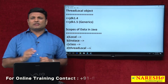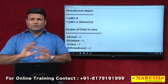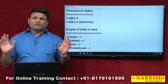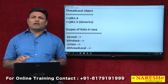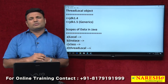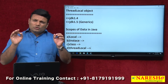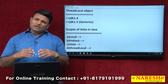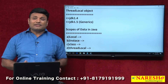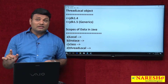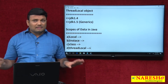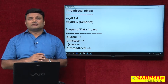Thread 1 keeps some data in the ThreadLocal object — only Thread 1 can access it, no other thread can access it. If you provide global visibility to that ThreadLocal object, whatever data you place inside will also get global visibility. If you provide local visibility to the ThreadLocal object, whatever data is inside will get local visibility. But only the thread that placed the data can come and access that data; other threads cannot access it.